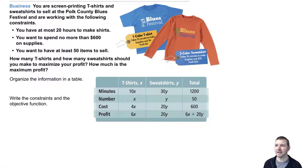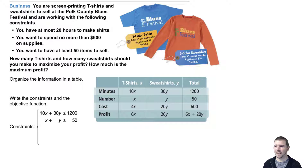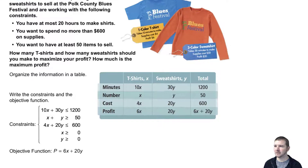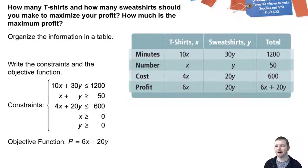Write the constraints and the objective function. The constraints, represented as inequalities: 10x + 30y ≤ 1200; x + y ≥ 50; 4x + 20y ≤ 600; x ≥ 0; and y ≥ 0. The objective function: P = 6x + 20y, where P represents profit.